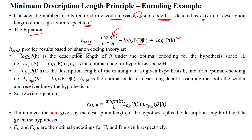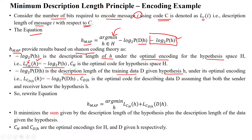The term minus log base 2 of P(h) is the description length of hypothesis h under the optimal encoding for the hypothesis space H, denoted as LC_H(h) = minus log2 P(h). Similarly, the second term, minus log base 2 of P(D | h), is the description length of training data D given hypothesis h under the optimal encoding C, denoted as LC(D | h) = minus log2 P(D | h).